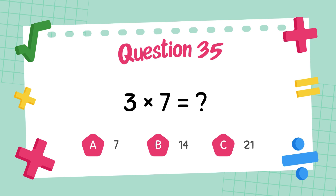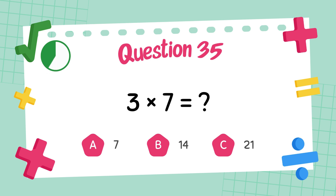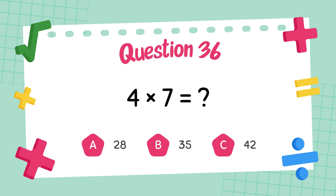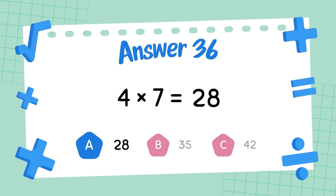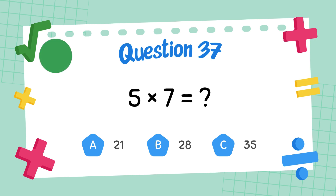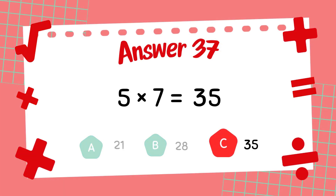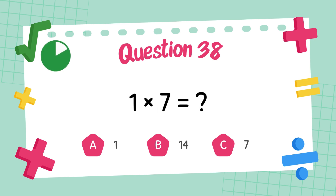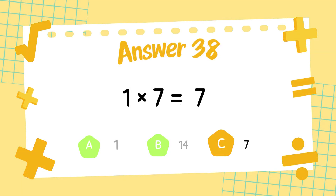What is 2 times 7? The answer is 21. What is 4 times 7? The answer is 28. What is 5 times 7? The answer is 35. What is 1 times 7? The answer is 7.